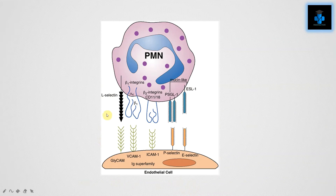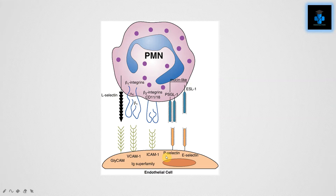Here is a clear pictorial representation of the interaction between endothelial cells and leukocytes. You can appreciate selectins, integrins, and mucins like PSGL-1 and ESL-1. On the endothelial cell we can appreciate P-selectin, E-selectin, ICAM-1, and VCAM-1, which are ready for interaction.